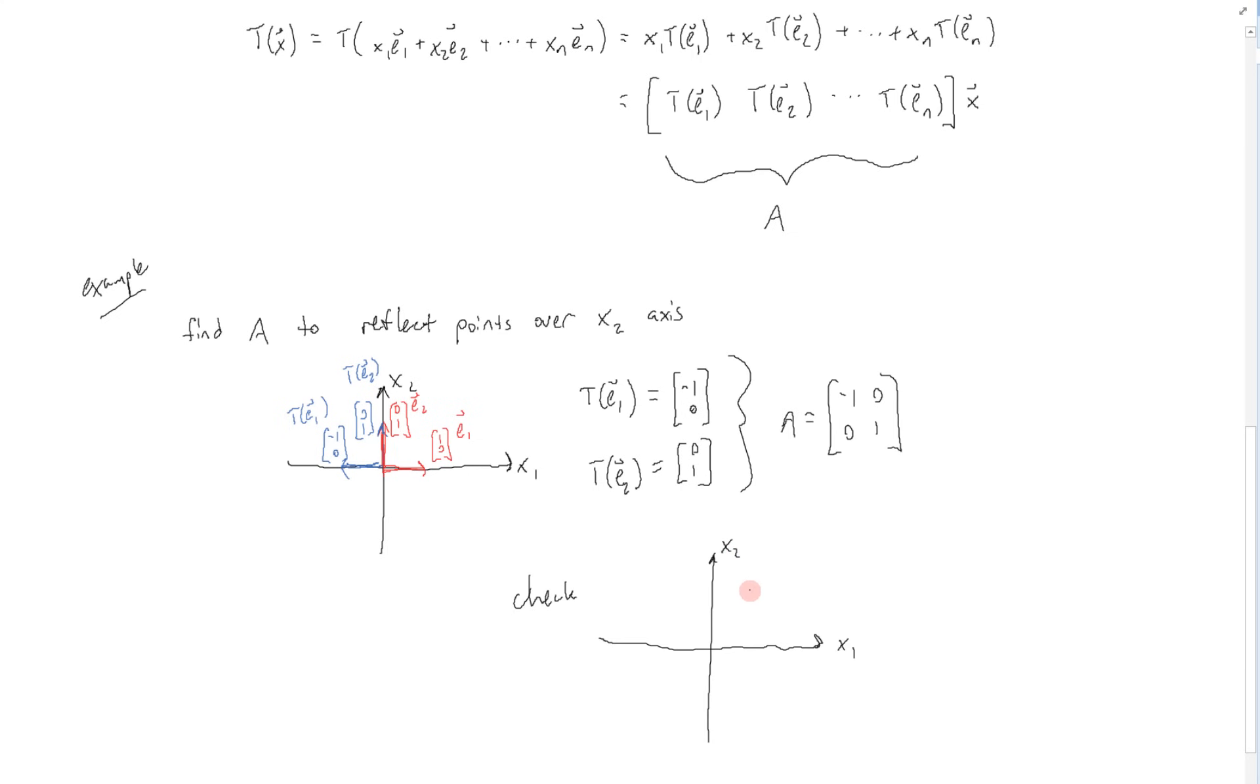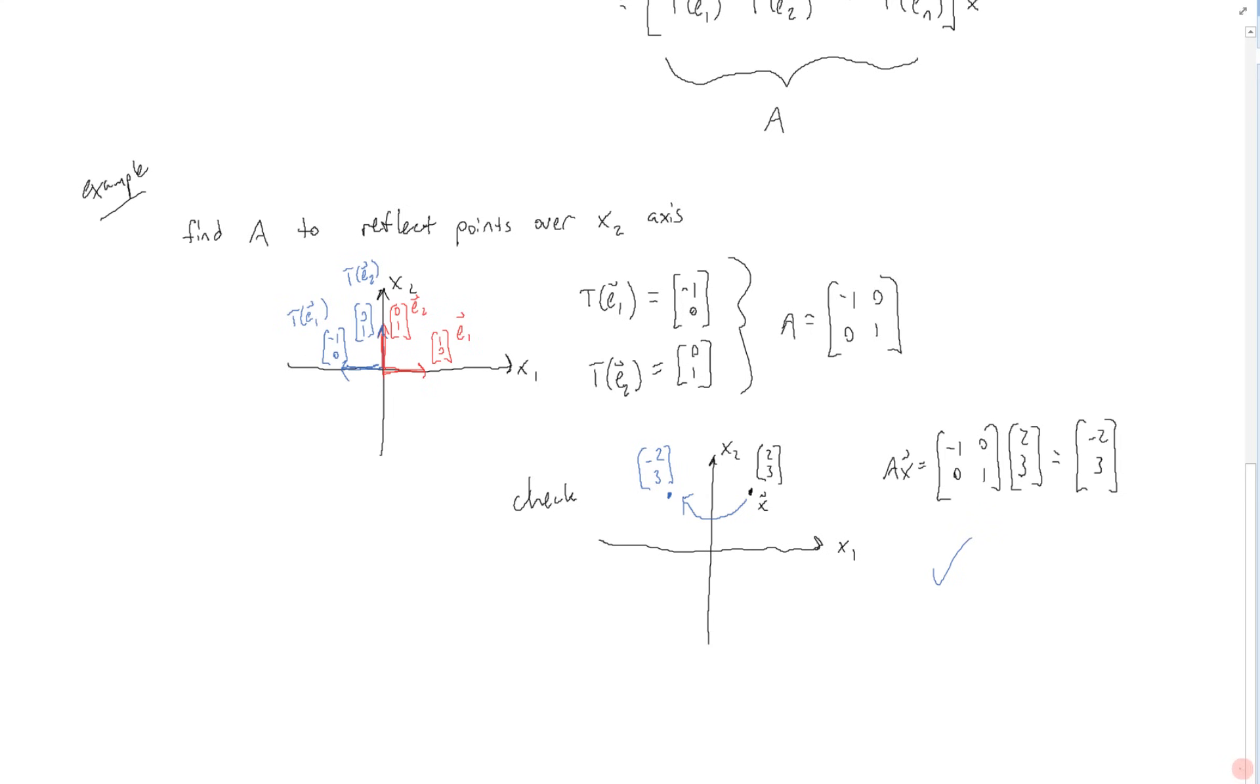So let's check this. Suppose we have a point in the x1, x2 plane. Let's call it x at (2,3). So we want to see what Ax is going to be. Here's our A times x is going to equal (-2,3). So that means that our point is going to be after a transformation right here at (-2,3). And we can see that that is exactly what we wanted. It got reflected over the x2 axis. So that does exactly what we expect using the matrix of the transformation that we just found.